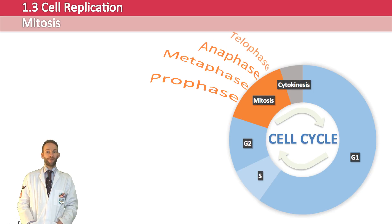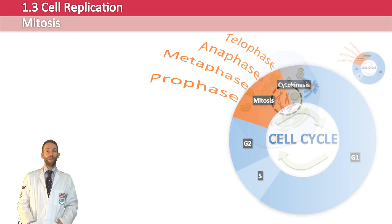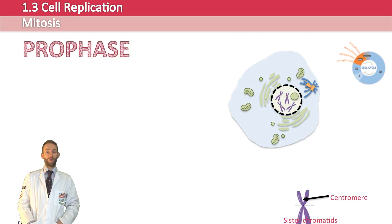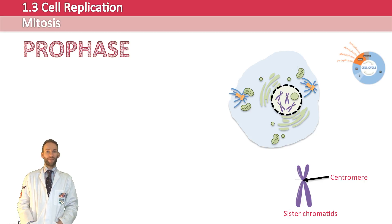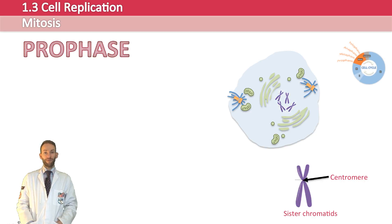Starting with prophase: the centrioles begin to move to opposite poles — a pair of centrioles have been duplicated and they move to opposite ends of the cell. The nucleolus breaks down, followed later by the nuclear envelope. The duplicated chromosomes are clearly visible with the two sister chromatids joined by a centromere in the middle.